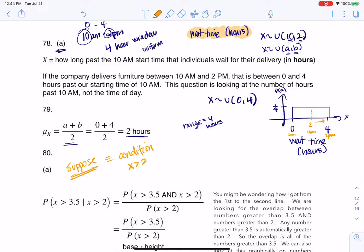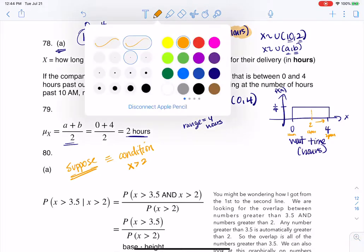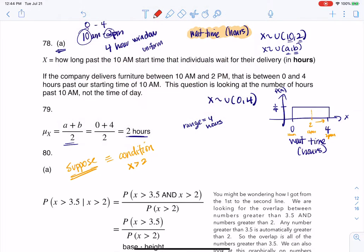It says what's the probability that a person must wait at least 1 1⁄2 hours more? Now, if you were going to wait at least 1 1⁄2 hours more, if it's noon and you go 1.5 more hours, that is really 3.5 hours overall. So it's saying what's the probability that someone's going to wait another 1 1⁄2 hours past 2? So if I take 2 plus 1.5, that's getting me to 3.5. So what's the probability you wait at least 1 1⁄2 hours more if you've already waited 2 hours?